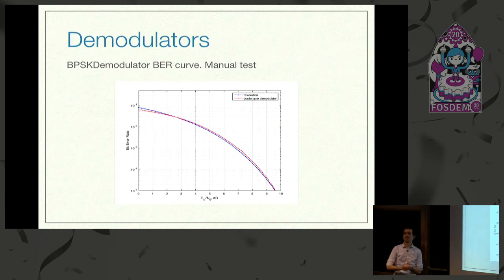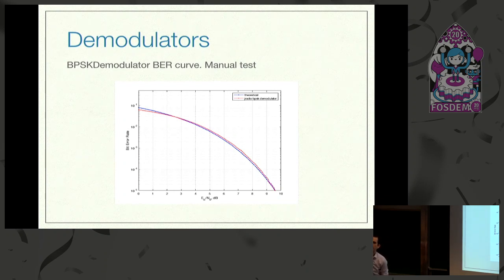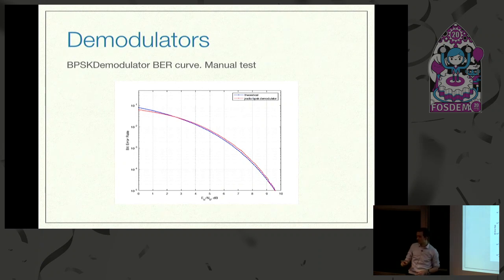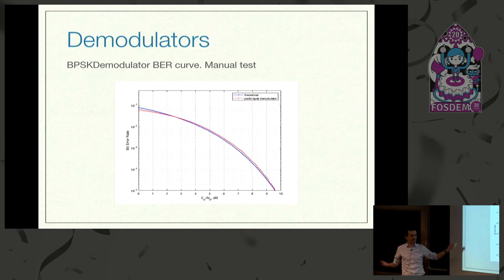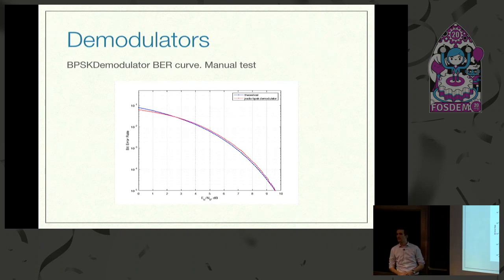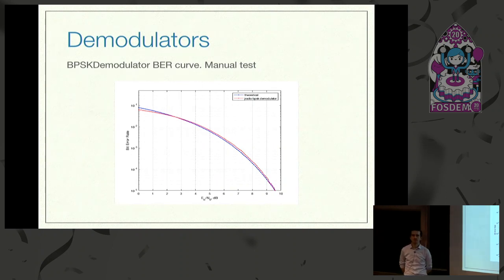Have you tried generating these signals as well? No, I just focused on decoding. Did you plan to put this onto the space segment of a satellite? I think that's not my choice — if anyone would like to use it, it's freely open, just use it. You can open GitHub and see the tests — everything's there. All the decoders could possibly be used. Thank you very much.